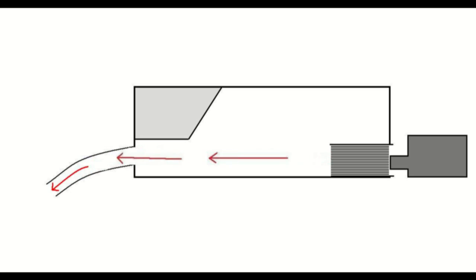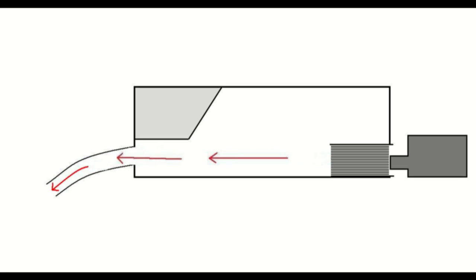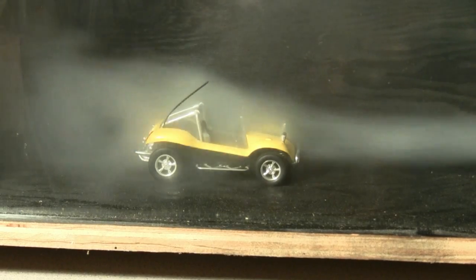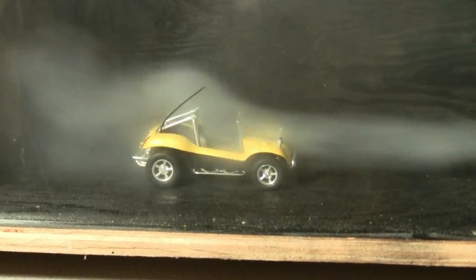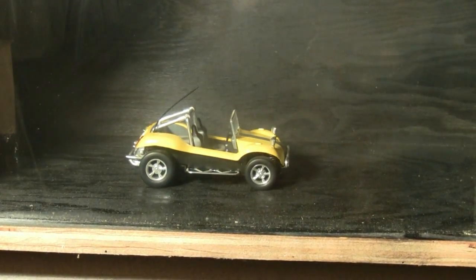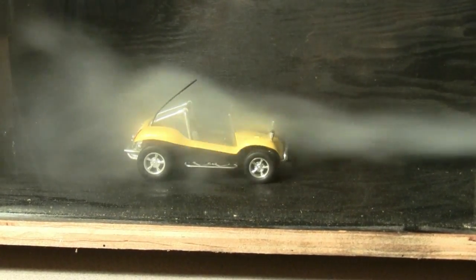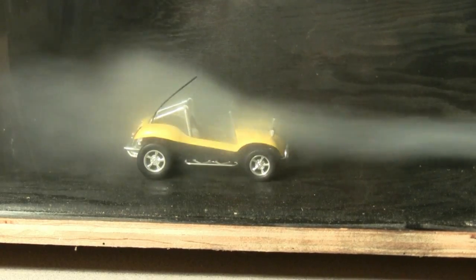Our small-scale wind tunnel works similarly, except that instead of blowing air through the tunnel with a fan, we suck it out using a vacuum. We then have fog flow through the tunnel so we can visibly see the air currents. Wind tunnels have had many different uses, but the main goal is to create as little air resistance as possible.